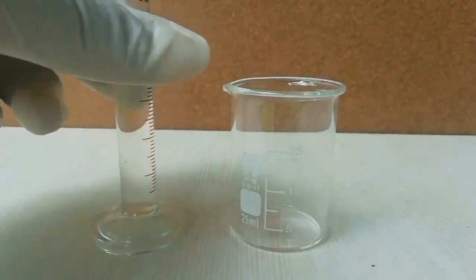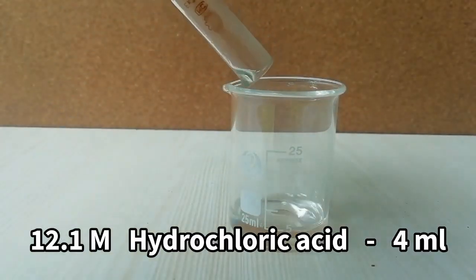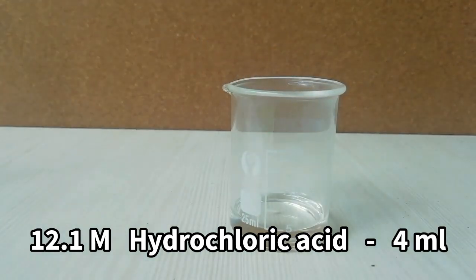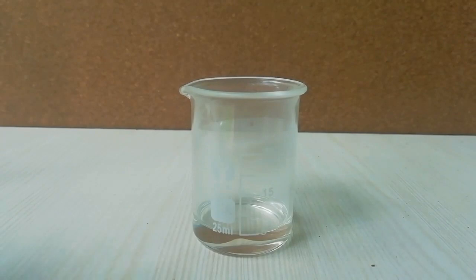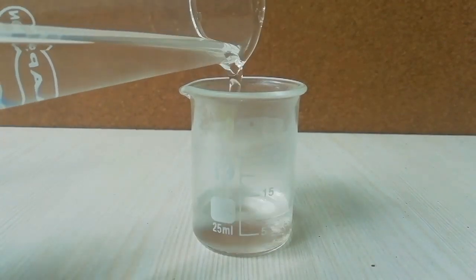First, I measured 4 ml of concentrated hydrochloric acid then I dilute acid by adding 16 ml of distilled water.